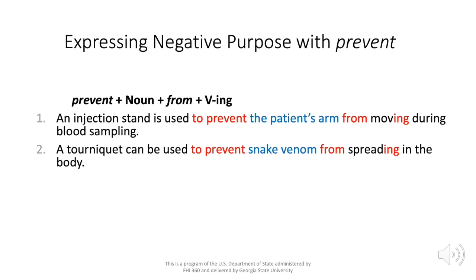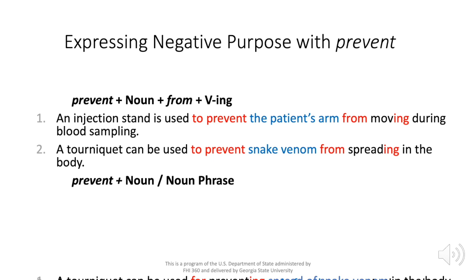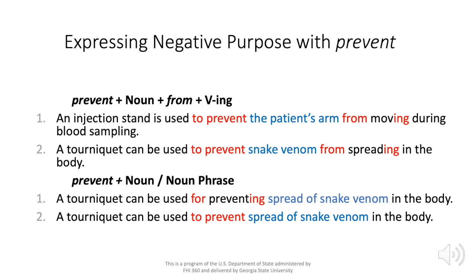The second pattern is 'prevent' plus noun or noun phrase. Two examples: a tourniquet can be used for preventing spread of snake venom in the body, or a tourniquet can be used to prevent spread of snake venom in the body.